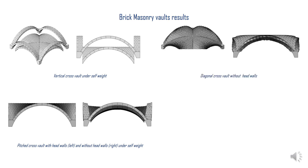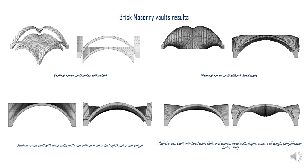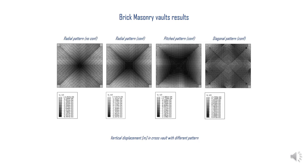A similar thing happens with the diagonal pattern: the outer part of the web edges cannot find equilibrium without confinement walls, but the rest of the structure appears to be stable. In the case of the radial pattern, even though the vault is able to find equilibrium without head walls, the confinement due to the presence of head walls contributes to stiffening the system, avoiding out-of-plane deformation of head arches. This is also evident in the contour plots of vertical displacement, which are almost 65% smaller at the crown when walls are present.